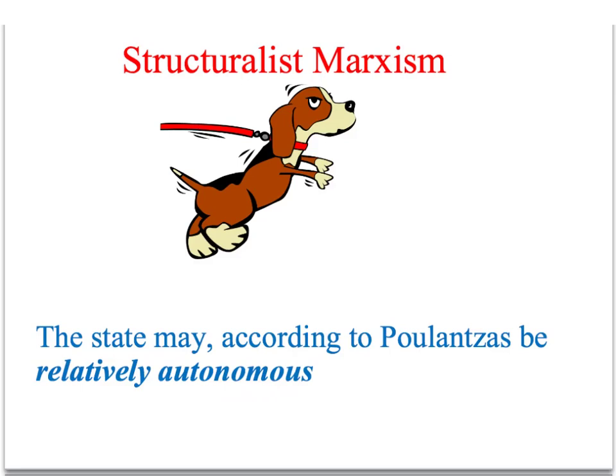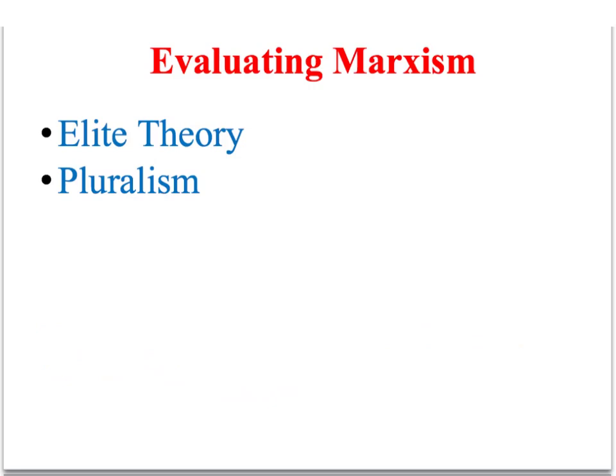If you get a 45-mark question on the Marxist theory, it's not enough simply to describe the theory — you've also got to be able to evaluate it. Perhaps the most effective way of doing this is to draw upon the other theories of power we've looked at during the course — elite theory and pluralism — and think about how these theories might challenge and criticise the core assumptions of Marxism.